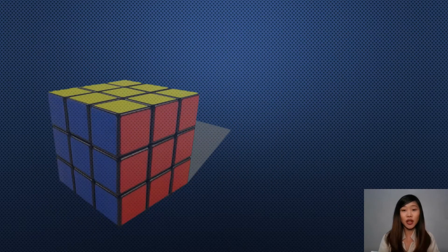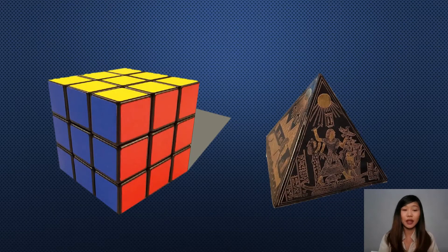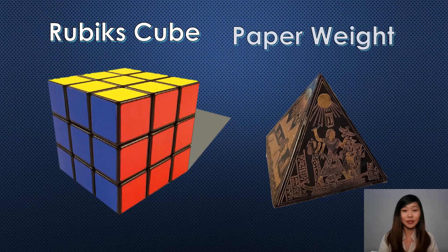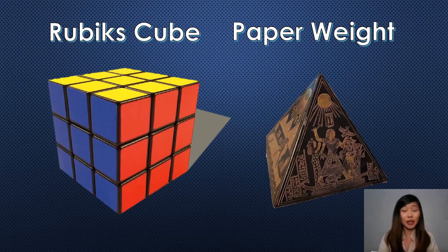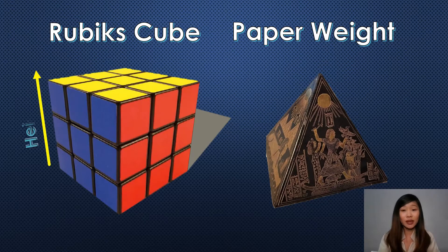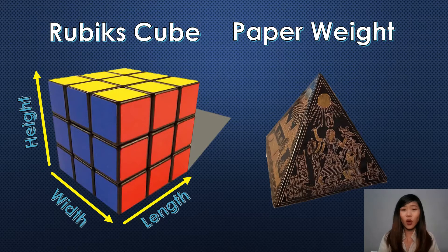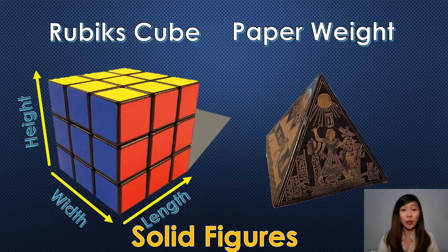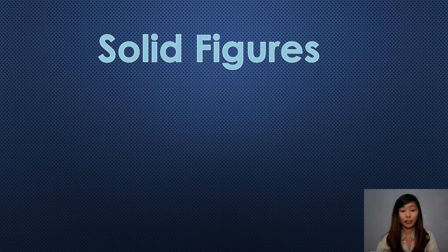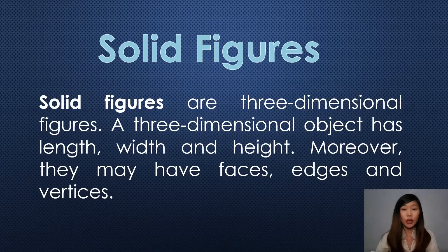These are some of the objects that Joanna found under his brother's bed: the Rubik's cube and paperweight. Are these objects the same as polygons? No! These objects have three dimensions which are the height, the width, and the length. Now, what do we call these objects? These objects are called solid figures. They are also called space figures or 3D shapes. Solid figures are three-dimensional figures. A three-dimensional object has length, width, and height.